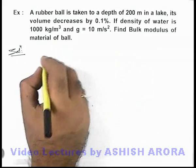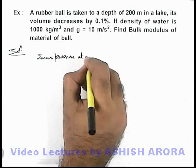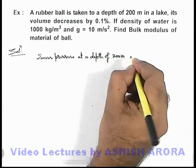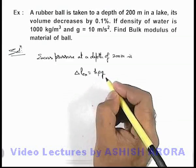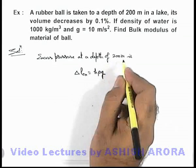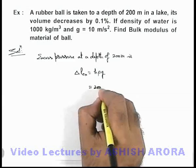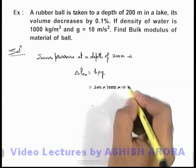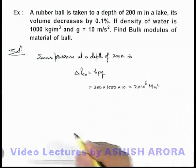In solution, we can directly write the excess pressure at a depth of 200 meters. This delta P excess can be easily calculated as h rho g, because right above the lake the pressure is atmospheric, and below 200 meters it is atmospheric plus h rho g. So excess pressure can be calculated as 200 multiplied by density of water, 1000, and g is also taken as 10. So it is 2 into 10 to the power 6 newtons per meter squared. This is the excess pressure.